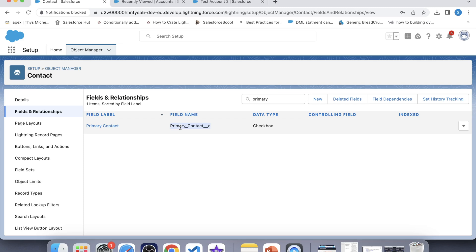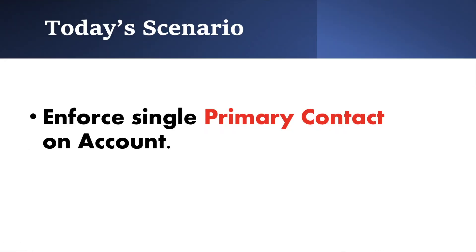Let's first understand today's scenario. We have a checkbox field 'Primary Contact' on the Contact object that indicates whether the contact is primary or not. If this checkbox is checked, the contact is primary; if not checked, the contact is not primary. According to the requirement, we need to ensure that only one primary contact should be present on an account. If a user tries to add more than one primary contact on an account, whether by insertion or updation, we need to show an error message: 'You cannot have more than one primary contact on account.'